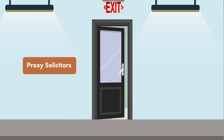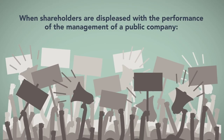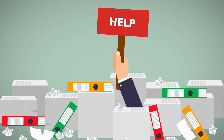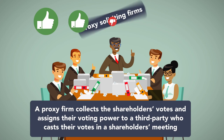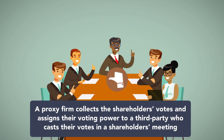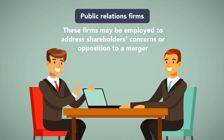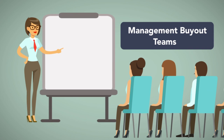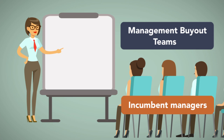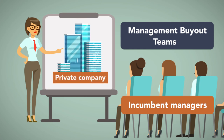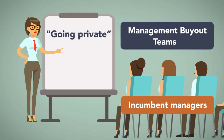Five: proxy solicitors. When shareholders are displeased with the performance of the management of a public company, they can remove and replace the company's board of directors. Soliciting and collecting the votes of millions of shareholders to do this is difficult. Proxy soliciting firms were created to address this problem. A proxy firm collects the shareholders' votes and assigns their voting power to a third party who casts their votes in shareholder meetings. Six: public relations firms. These firms may be employed to address shareholders' concerns or opposition to a merger. Seven: management buyout teams. A management buyout occurs when a group of incumbent managers submit a competing offer to buy the company from the other shareholders. This may result in converting a public company into a privately held company once all outstanding public shares are bought — a process referred to as going private.